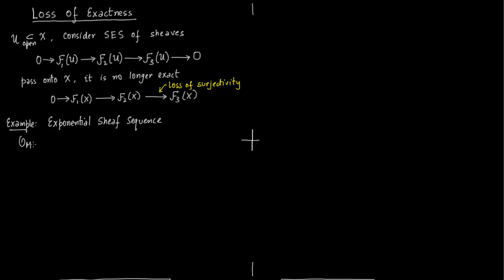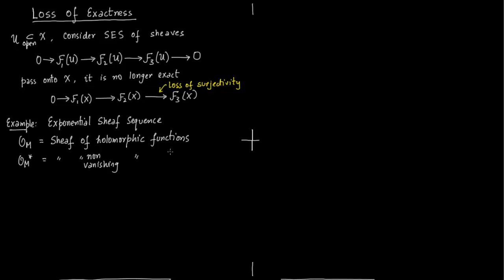Let O_M denote the sheaf of holomorphic functions, and O_M* the sheaf of non-vanishing holomorphic functions. We have a sheaf morphism from O_M to O_M* via the exponential map. The exponential map satisfies exp(x + y) = exp(x)·exp(y), so it obeys the homomorphism properties.